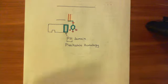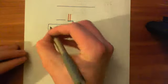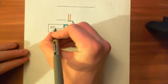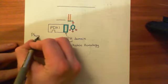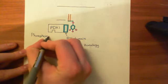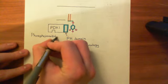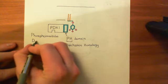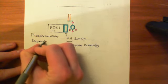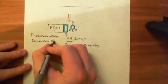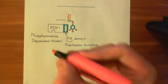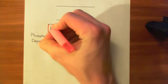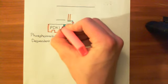The actual enzyme that has this pleckstrin-homology domain is phosphoinositide-dependent kinase 1, PDK1. PDK1 is short for phosphoinositide-dependent kinase 1 — 'P' for phosphoinositide, 'D' for dependent, 'K' for kinase. This is phosphoinositide-dependent kinase 1, PDK1, outlined here in red.